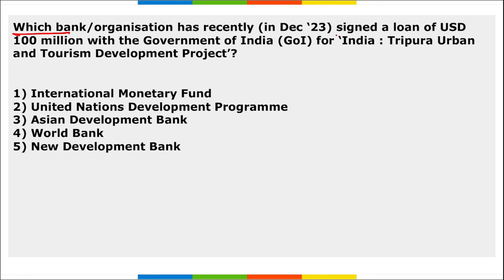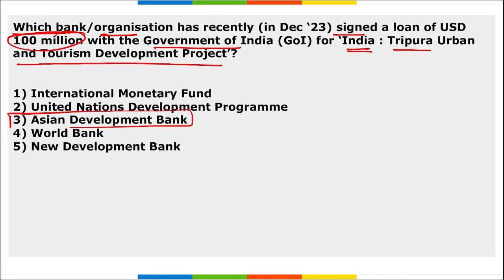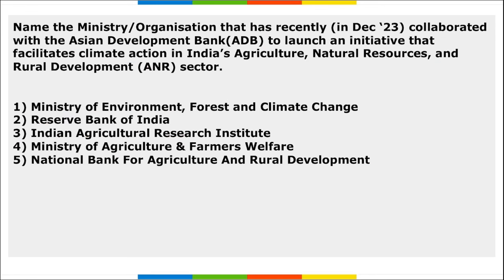Next: which organization signed a loan of 100 million US dollars with the Government of India for the India Tripura Urban and Tourism Development Project? It is the Asian Development Bank (ADB).